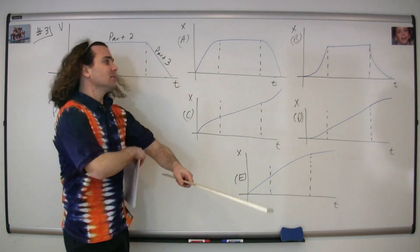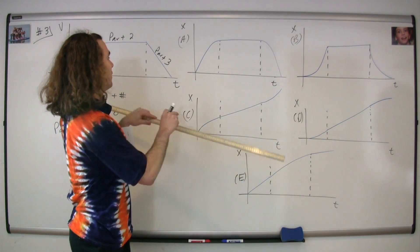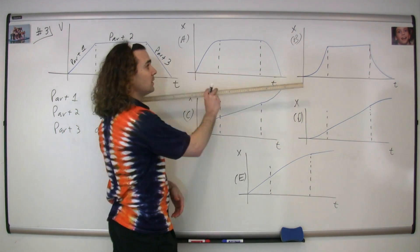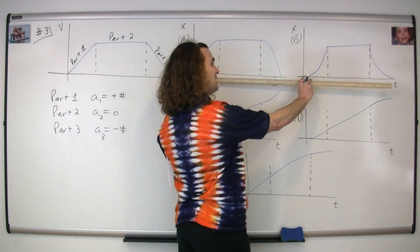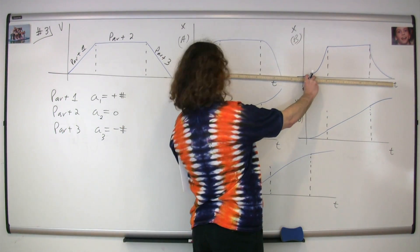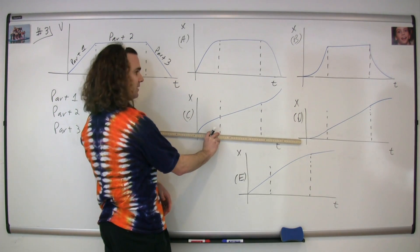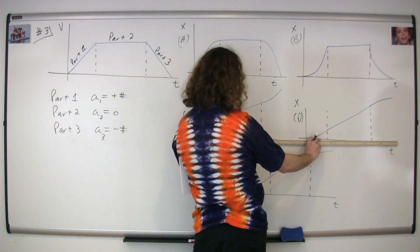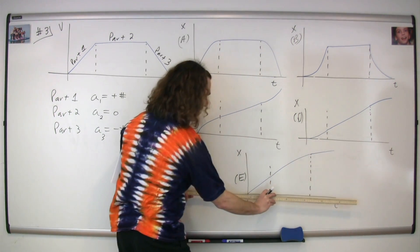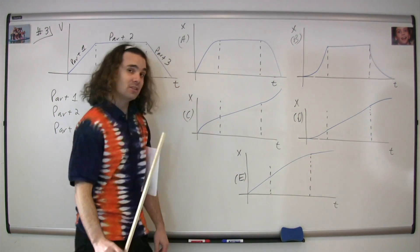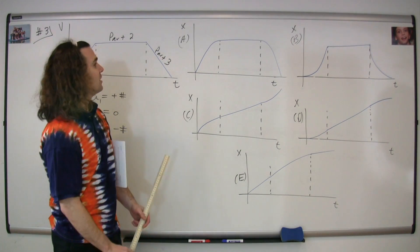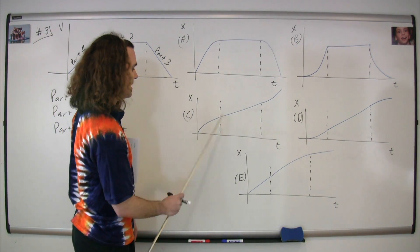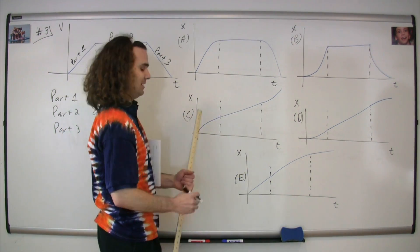That means it cannot be A, it could be B, it cannot be C, it could be D, and it cannot be E. So just that simple fact rules out A, C, and E.